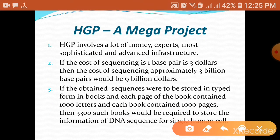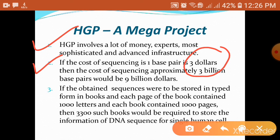Why is HGP called a mega project? The Human Genome Project was called a mega project because a lot of money, experts, and most sophisticated and advanced infrastructure was involved. It was expected that the cost of sequencing per base pair was $3, and since the human genome has 3 billion base pairs, the total expenditure was $9 billion — a huge amount.